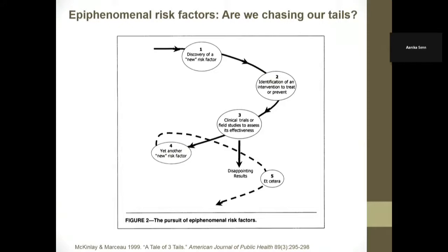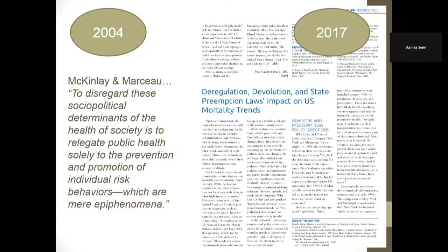Here's this idea that we chase epiphenomenal risk factors. We do well getting rid of one risk factor, then another risk factor arises — we're in this constant chasing-our-tail circle. This is an old paper by McKinley and Marceau, which says we ought to pay attention to the upstream factors that are driving these epiphenomenal characteristics in the population. One of my colleagues wrote an AJPH editorial where we talk about three institutional policies we're paying close attention to with respect to growing state inequality and mortality: deregulation, devolution, and this new phenomenon called preemption, which I will come back to in a few minutes.